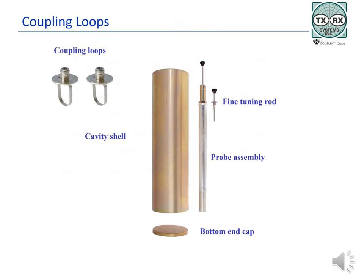The parts of a bandpass cavity are shown here. The main elements are the cavity itself, made up of the shell and bottom cap. The top part of the cavity is the mounting plate for other components, the main probe assembly, a fine tuning rod if used, and the coupling loops. Cavities may have slightly different appearances and construction, and the loops used in them will be different depending on what type of filter or cavity is needed. Newer versions of cavity filters and combiners have been and are being developed, but the physics and operation of cavity filters and coupling loops remains the same.